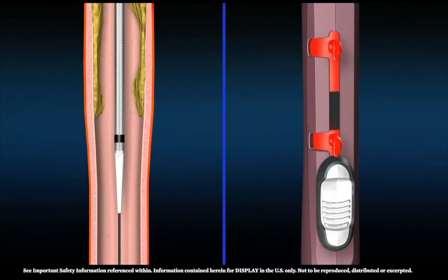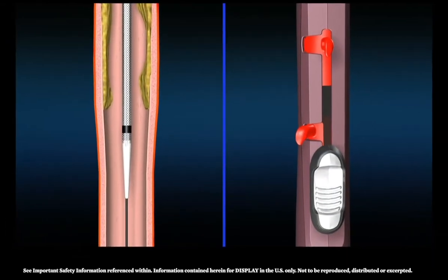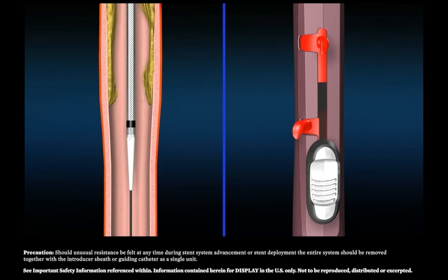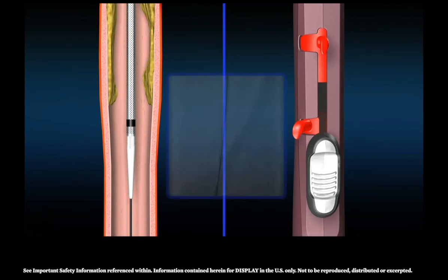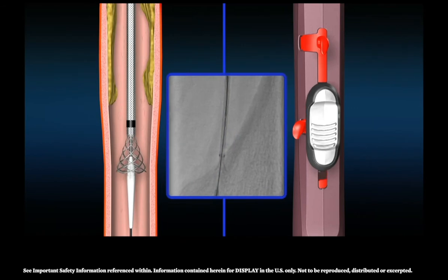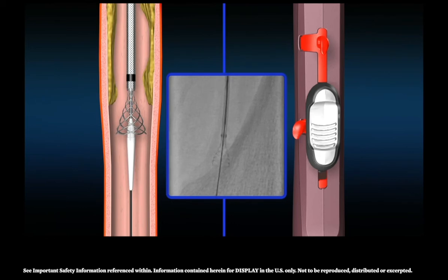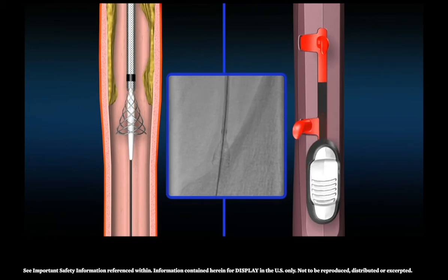To initiate deployment, rotate the system lock to the unlocked position. Do not unlock the deployment lock. Slowly advance the thumb slide. Increase magnification to better visualize stent deployment. Maintain increased magnification during the entire stent deployment procedure.